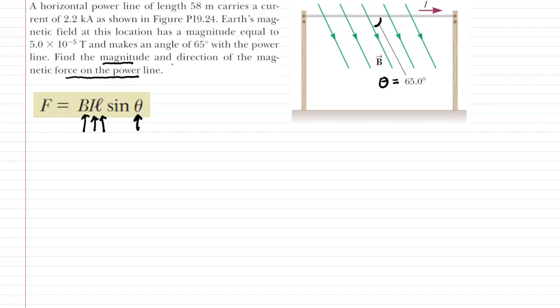We also know the magnitude of the magnetic field. That is this value given in the problem. That's going to be our B value. We know the length of the wire is 58 meters, and then we also know the current that is going through the wire. It is given in kiloamps, so we do have to change that into amps.